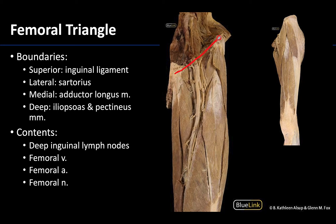Moving to the lateral boundary, it's one of my favorite muscles — the sartorius. This is the most superficial muscle of the anterior thigh, and you can see the cut portions of the muscle here. It's actually the longest muscle in the body, so it extends quite a way. You can see that it was removed so you can follow the vasculature, but the sartorius forms this lateral boundary.